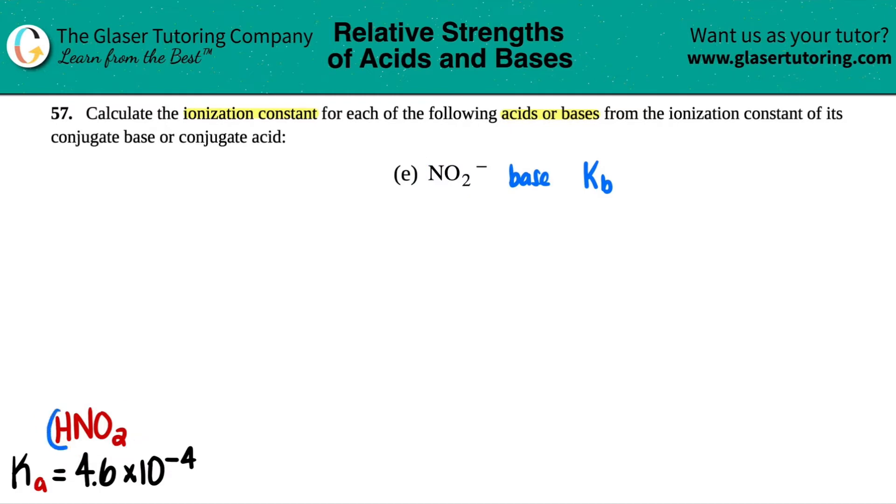You gain a hydrogen, right? And then you plus one from your charge. Negative plus one is zero and that's why you don't see any number here. But the Ka value for HNO2 is 4.6 times 10 to the negative fourth.